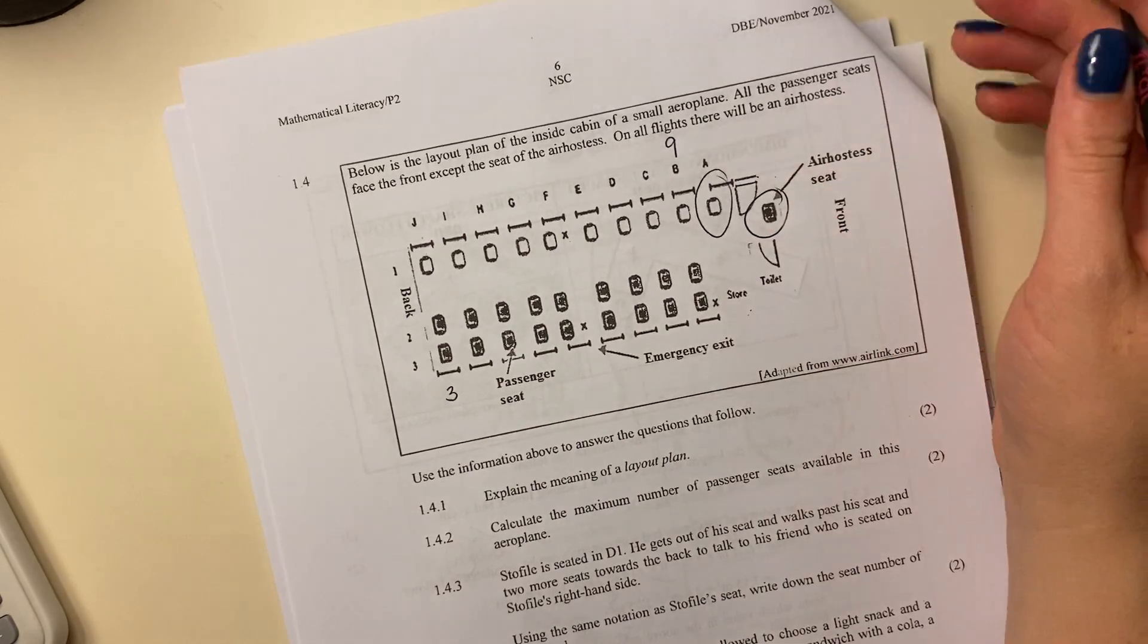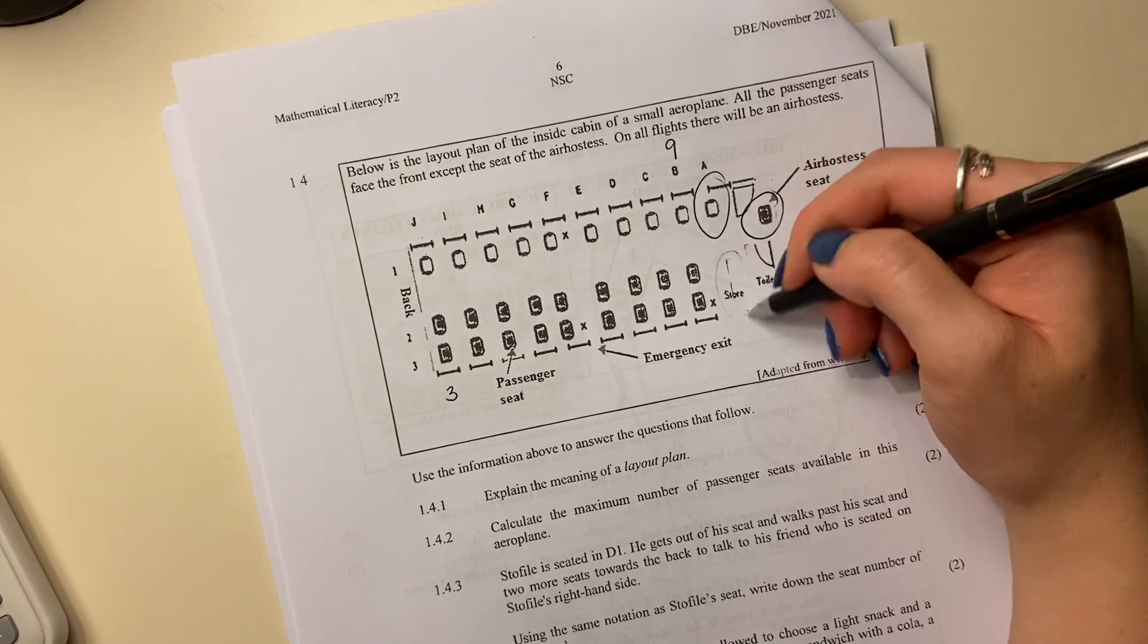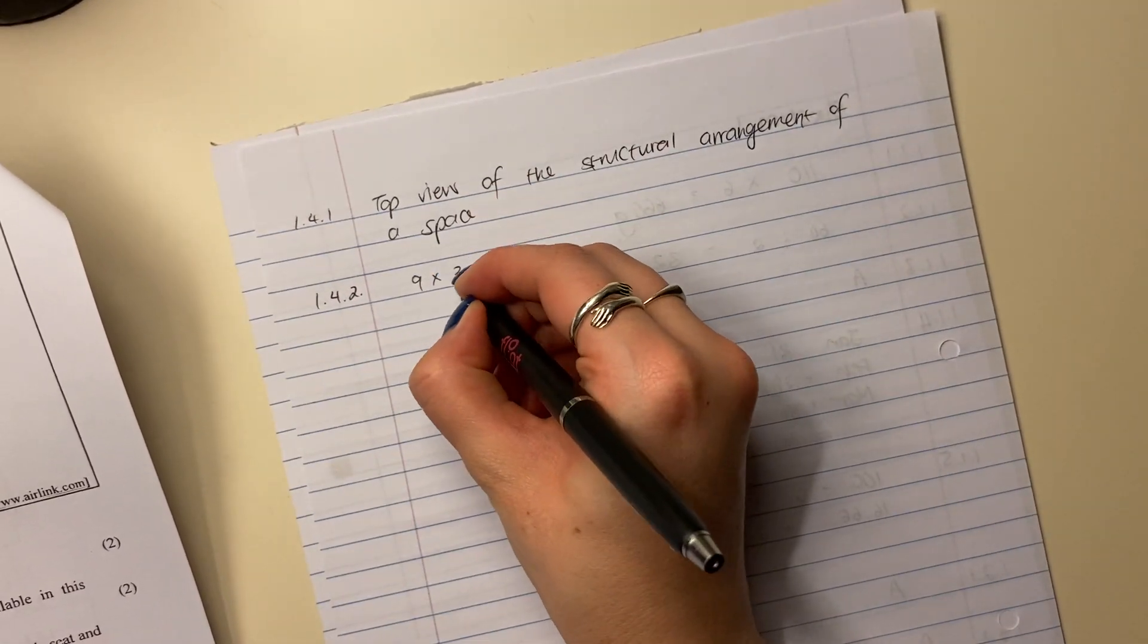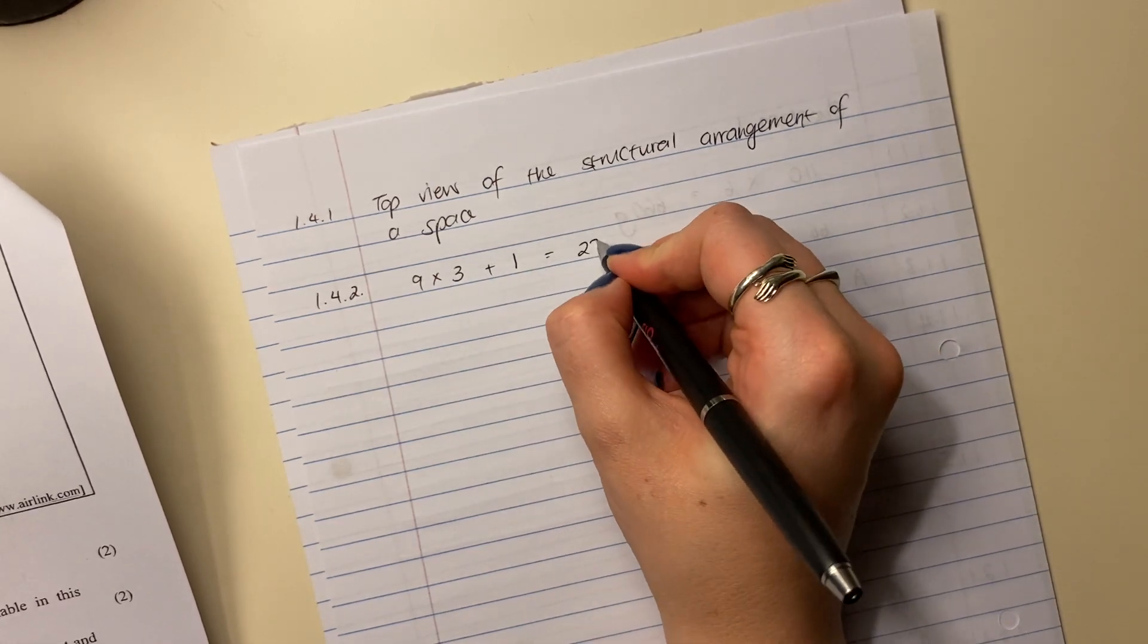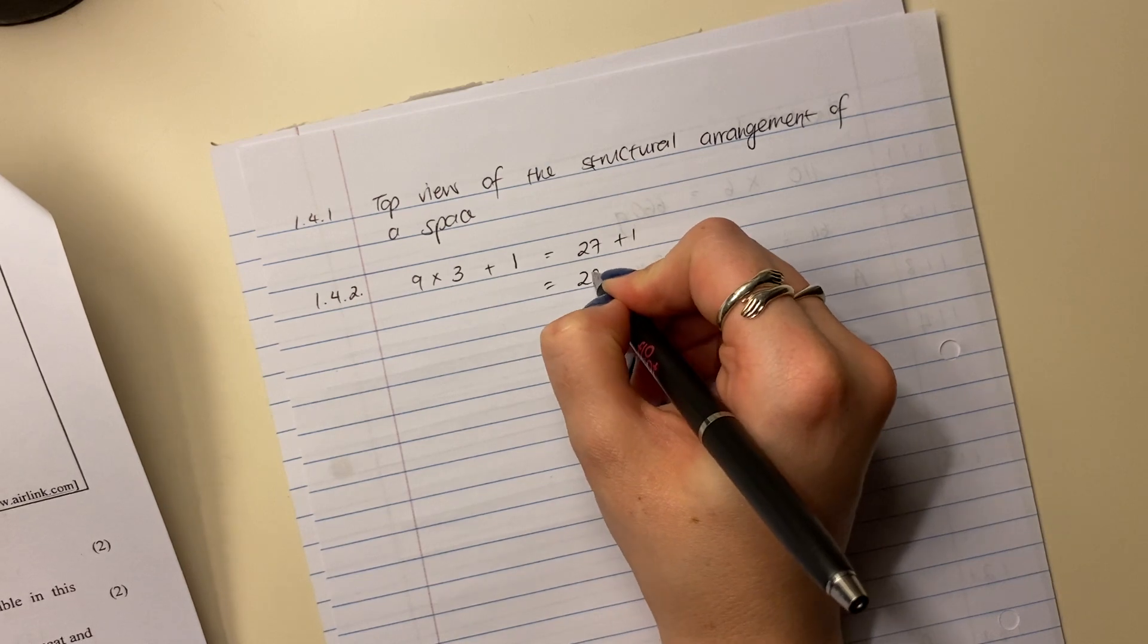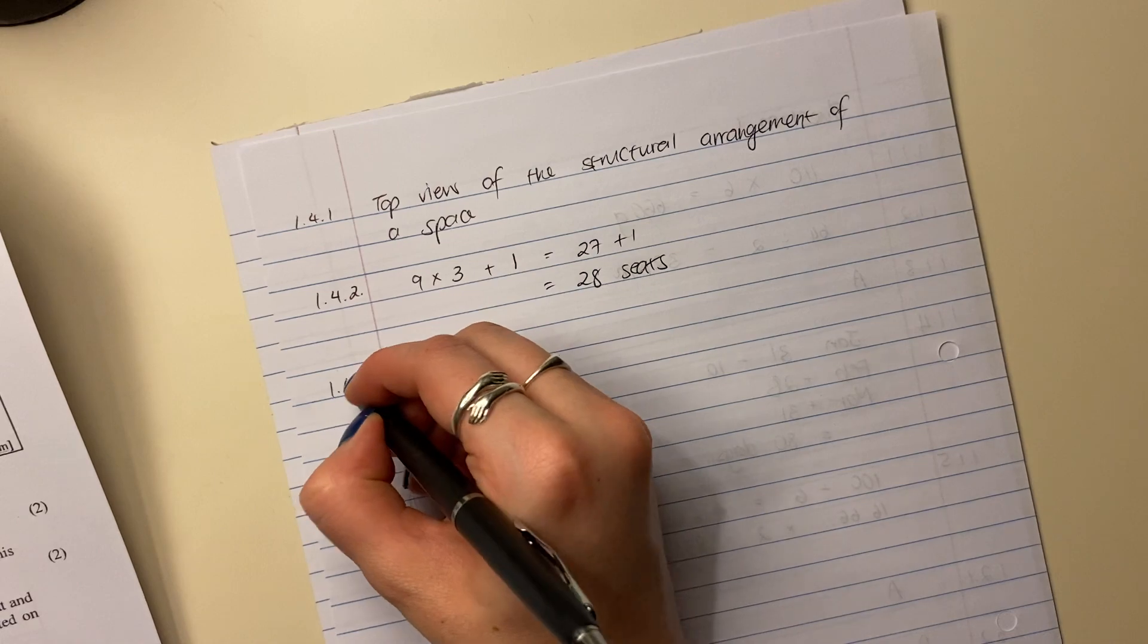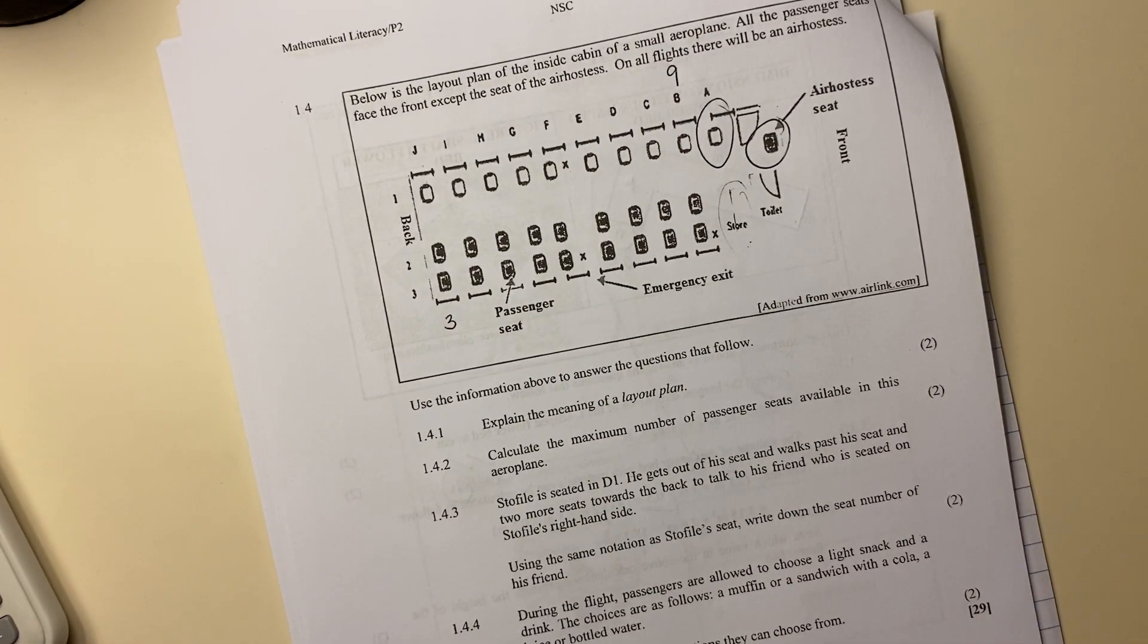But then there's this random A that's just by itself. It's got nothing over here because it seems to have some sort of store there. So it's going to be nine times three plus one. You should be able to do that in your head, which is 27 plus one, which is 28 seats. If you can't do it in your head, pop it in your calculator. Don't stress about these things.